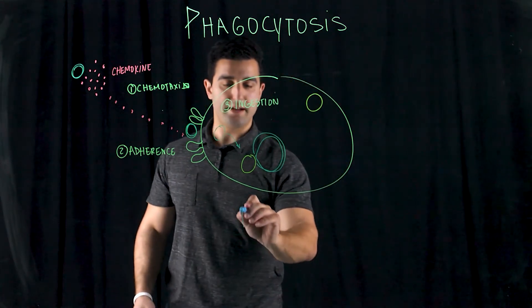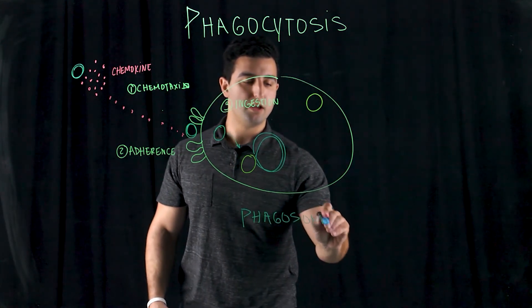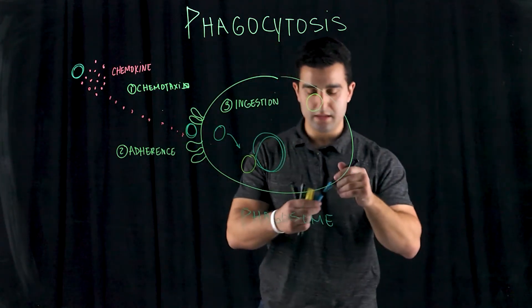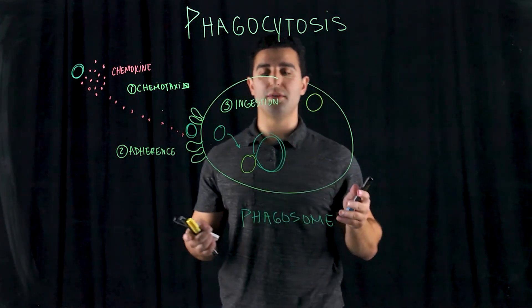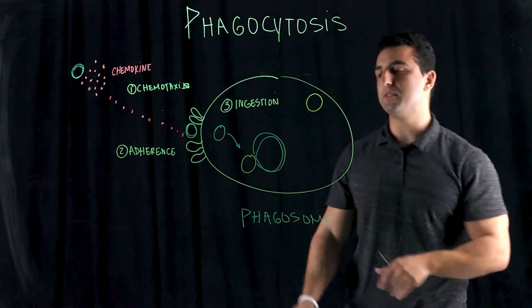So a phagosome is created with a combination of the lysosome and the pathogen. So here, when we look at it, there's this fusion. This fusion is called the phagosome. And this begins the process of digestion.